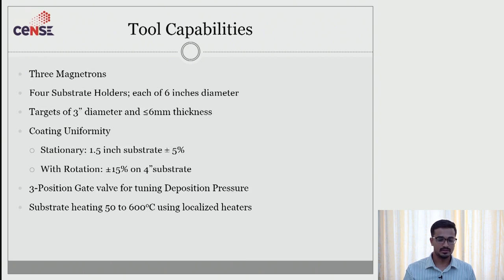Let us move on to tool capabilities. As I earlier told, we have a possibility of loading three different targets simultaneously and get a deposition on four different holders. So you can do a combination deposition of three different materials onto four different holders. These targets are of 3 inch diameter and 6 mm thickness. The coating uniformity in stationary mode of deposition is 1.5 inch and the uniformity in rotation mode will give you plus or minus 15 percentage on a four inch substrate. And also we have a substrate heating which is capable to go up to 600 degree Celsius.